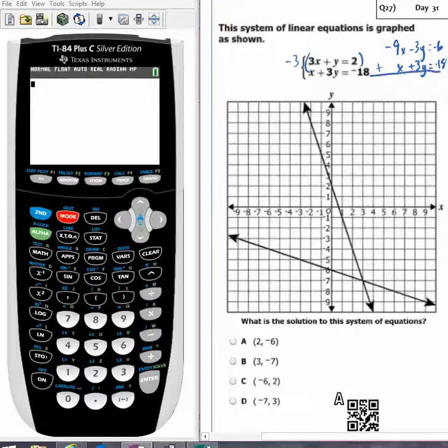Now I'm going to add everything up together and I get negative 8x. These cancel and that's equivalent to negative 24.